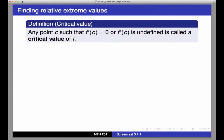To do this, we notice that whenever a function has a local extreme value, the derivative of the function is either 0 or undefined there. So we'll call any point where f prime of c is 0 or undefined a critical value of f.